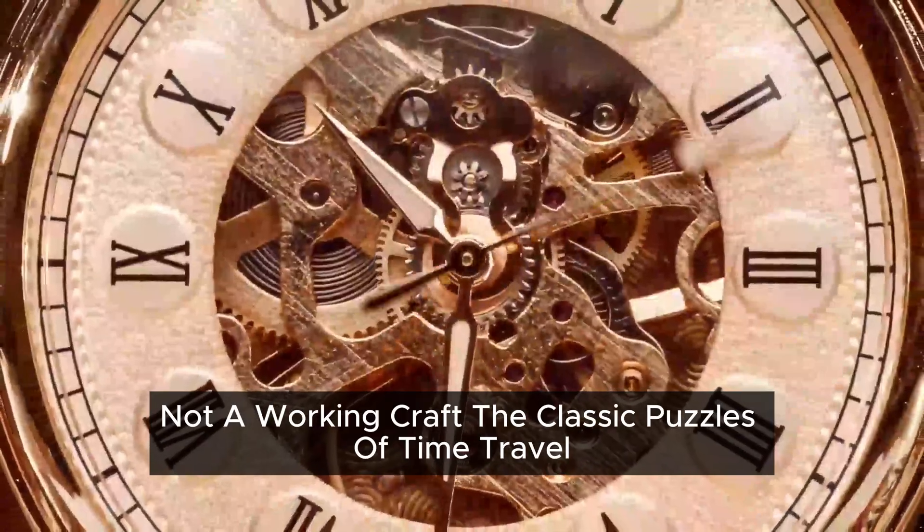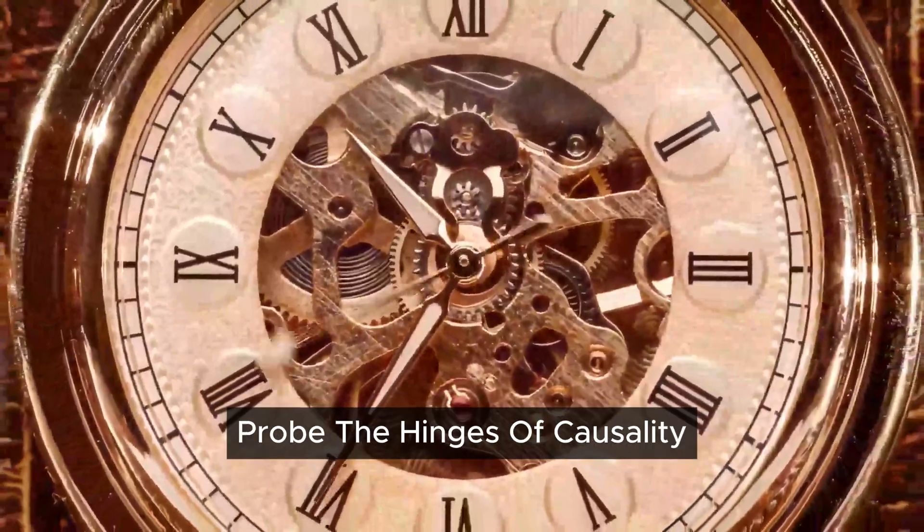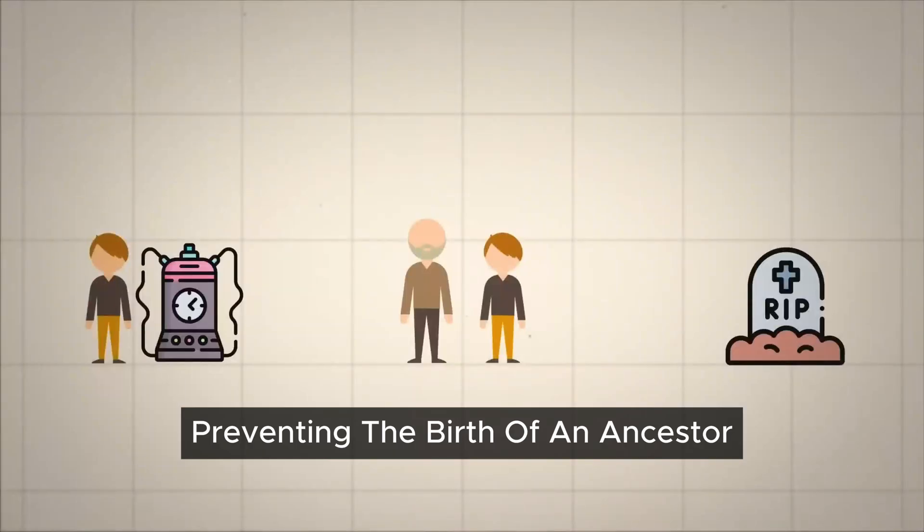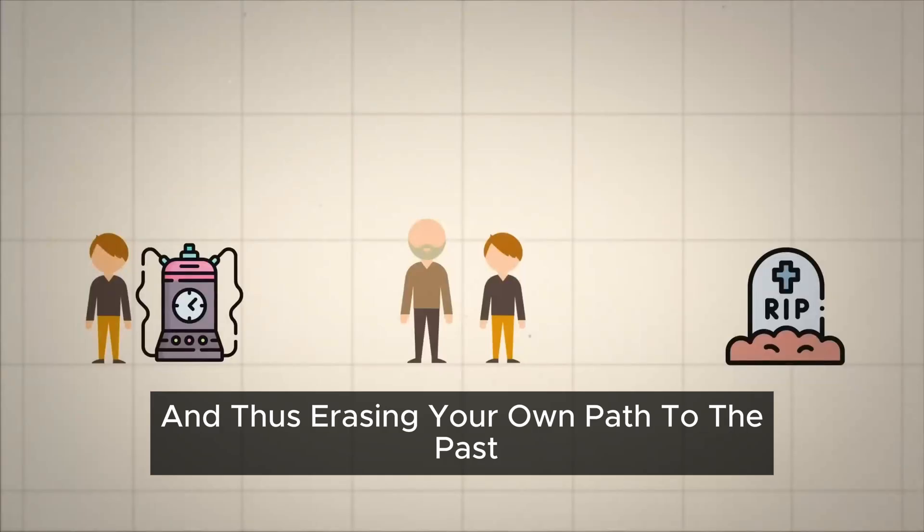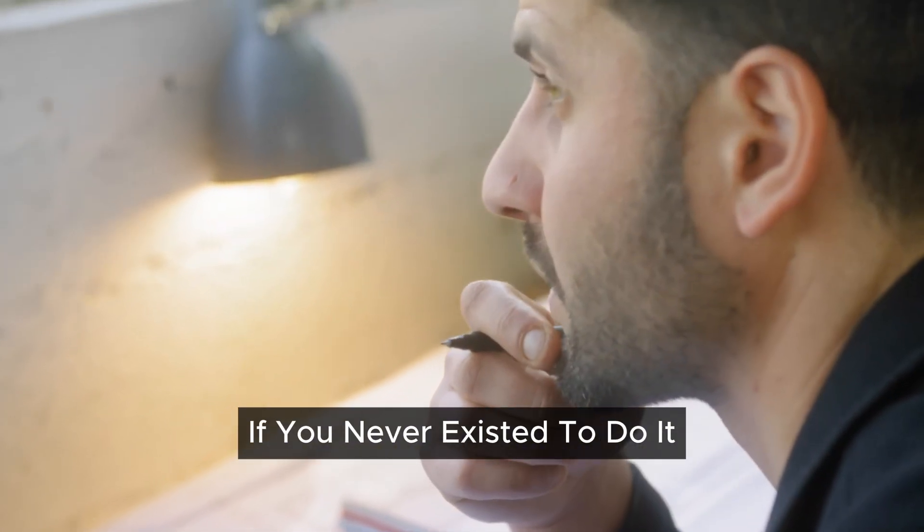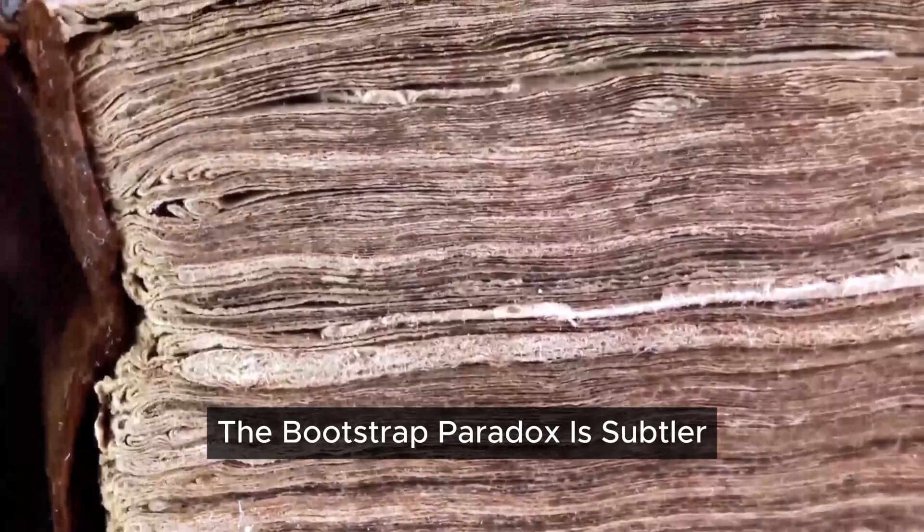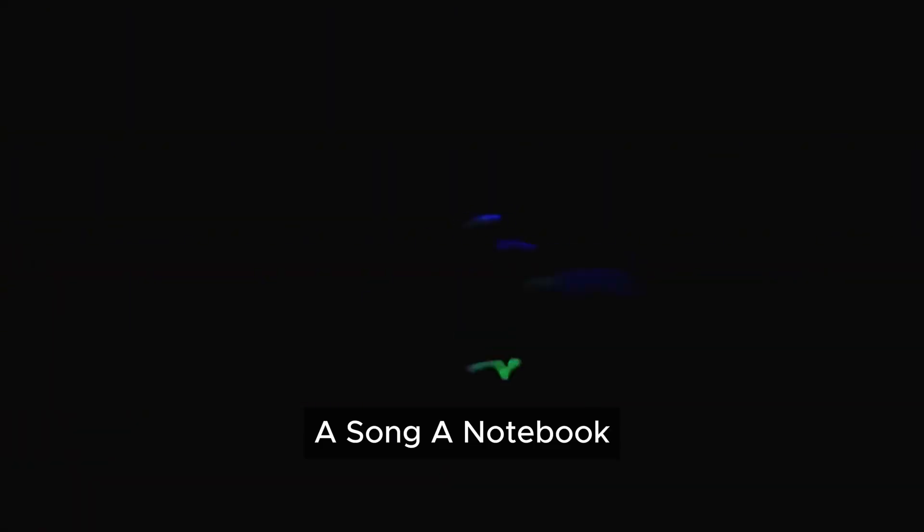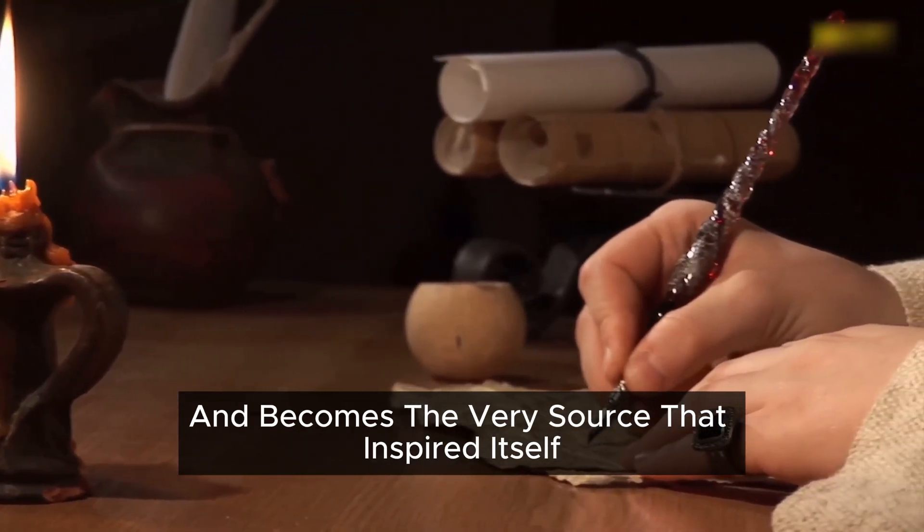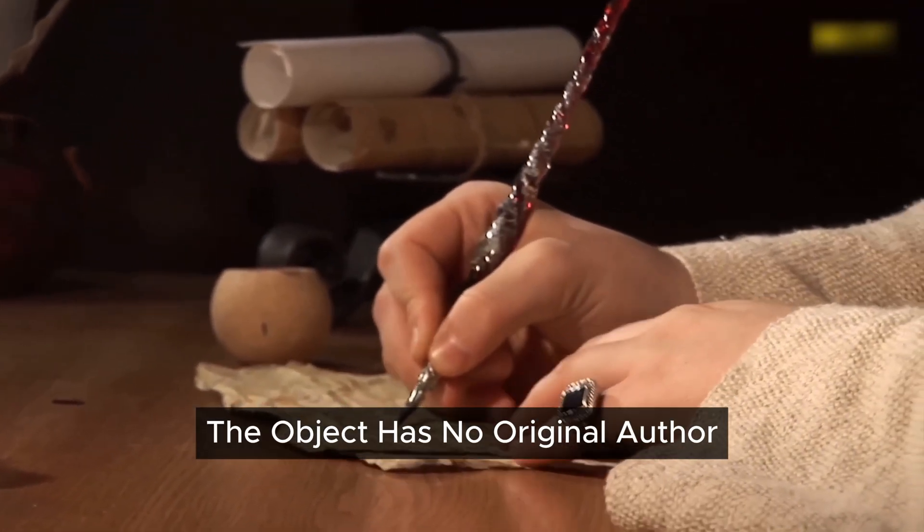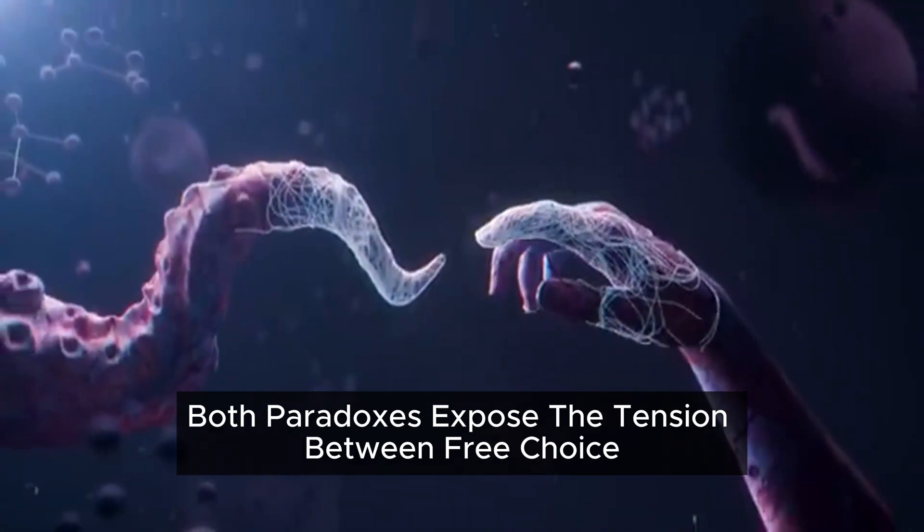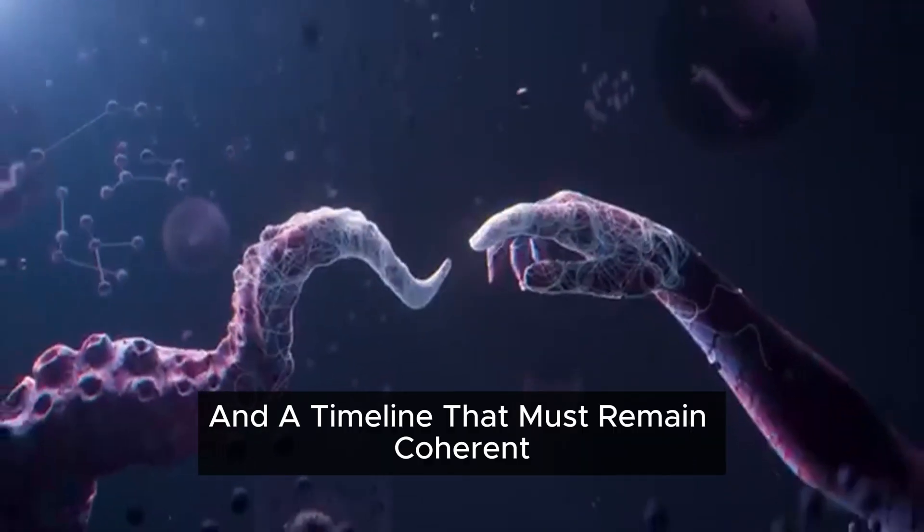The classic puzzles of time travel probe the hinges of causality. The grandfather paradox imagines preventing the birth of an ancestor, and thus erasing your own path to the past. The contradiction is obvious: who pulled the trigger of history if you never existed to do it? The bootstrap paradox is subtler. A song, a notebook, or a blueprint is carried back in time and becomes the very source that inspired itself. The object has no original author. It loops without a first cause. Both paradoxes expose the tension between free choice and a timeline that must remain coherent.